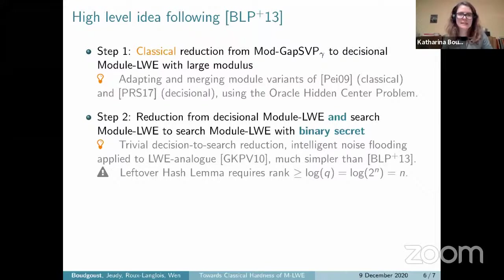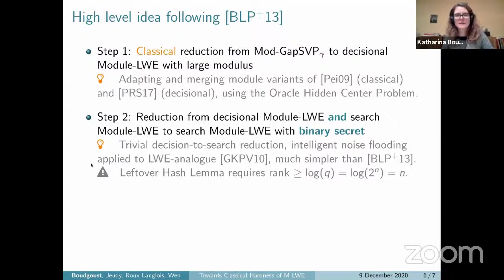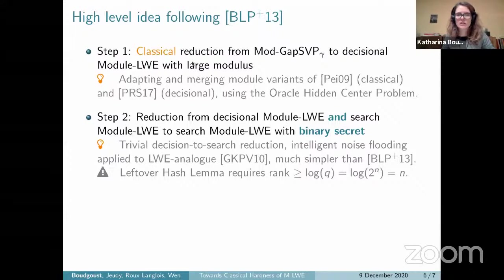Step two is a reduction from module LWE to a variant where the secret is chosen to be binary — coefficients in {0, 1} instead of between 0 and q-1 — using an argument for LWE adapted to the module setting with more intelligent noise flooding. This is where the rank restriction comes from: to apply the leftover hash lemma, we need rank larger than log q, but q from step one is exponentially large, giving linear rank. Step three shrinks the modulus from large to small using a result from Albrecht and Deo, where the loss depends on the norm of the secret — hence we take a binary secret to minimize the loss.